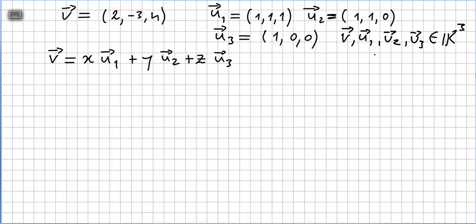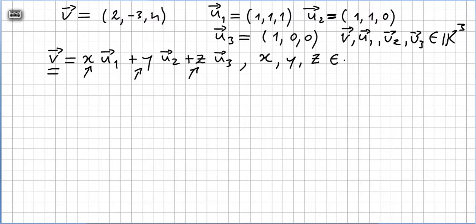The question is: can we write vector V = (2, -3, 4) as a linear combination of u1, u2, u3? If that is possible, there will be scalars X, Y, and Z — all real numbers — such that multiplying these three vectors by these three scalars gives us vector V. Do not mistake these for vectors; they are scalars. Please check the previous videos for scalar multiplication.